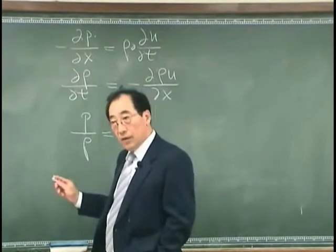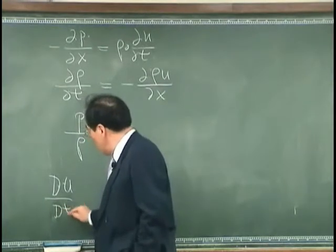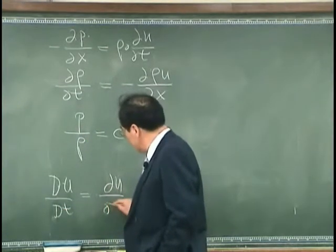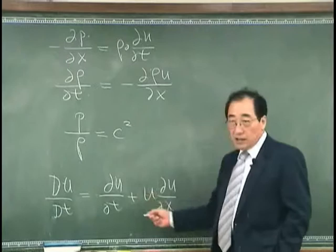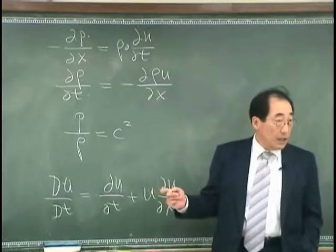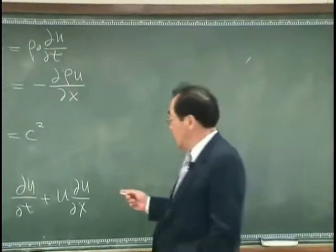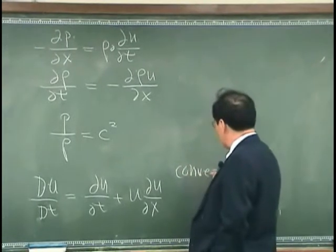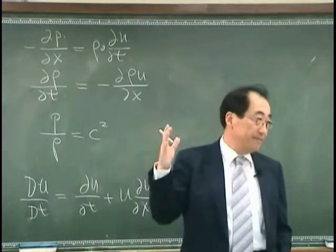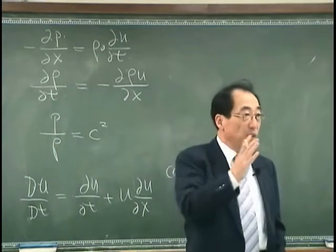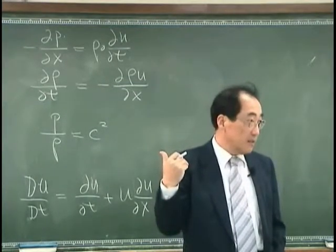One thing we did was we neglected this term. That means what? We neglected the convection. In other words, if I have mean flow over here and I shout, then this equation cannot predict.